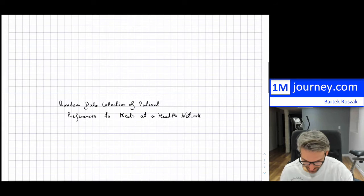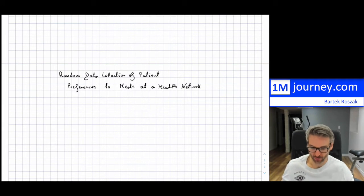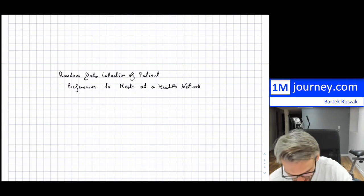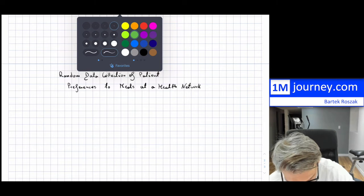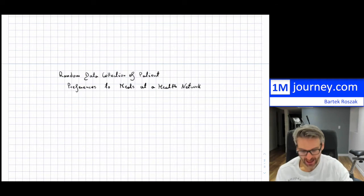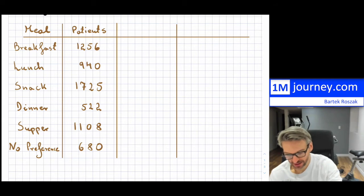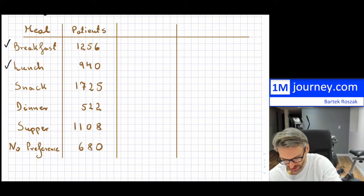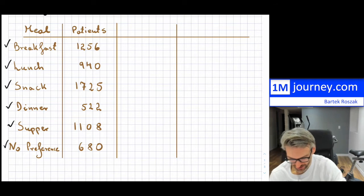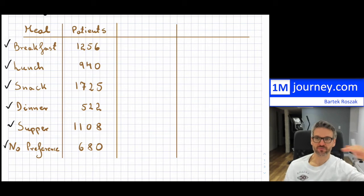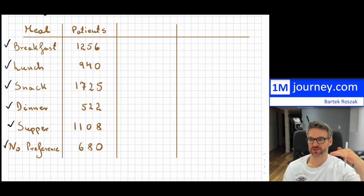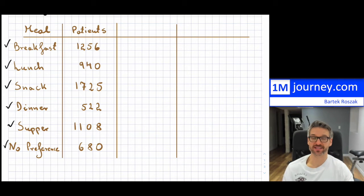I have put a title already. Now my axes — I'm going to draw them. The x-axis is straightforward: breakfast, lunch, snack, dinner, supper, no preference — so I have 6 bars going up. But on your y-axis, you need to think about how you're going to scale it.